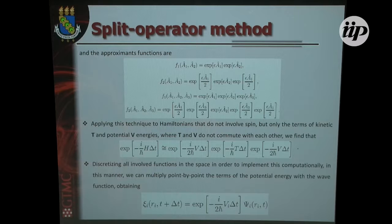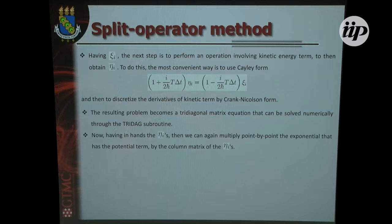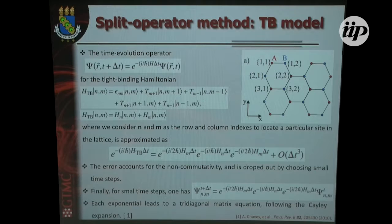At the end, you end up with just multiplication of tridiagonal matrices, which is really easy to implement. Differently from, for instance, the Landauer-Büttiker formalism and other ones. In our work using the tight-binding Hamiltonian, the Hamiltonian describes the hopping energy between atoms in this lattice, with parts corresponding to rows and columns. We split the time evolution operator in this way.